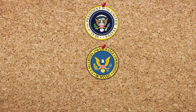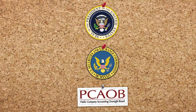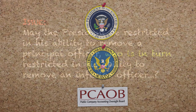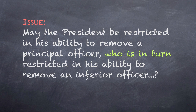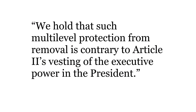This limitation of the president's removal power was consistent with Humphrey's Executor, but that case did not involve a double layer of insulation between an officer and the president's removal power. The issue — whether the president may be restricted in his ability to remove a principal officer who was in turn restricted in his ability to remove an inferior officer — was not settled by Humphrey's Executor, the challengers argued, and the court agreed. The court held that such multi-level protection for removal is contrary to Article II's vesting of the executive power in the president.